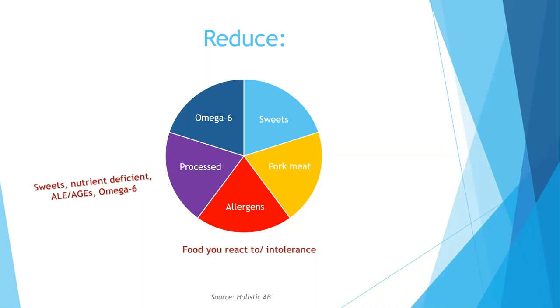AGEs and ALEs often occur when you grill or stir-fry for a long time. So you want to cook your food by steaming, or put it in the oven, rather than grilling and frying.